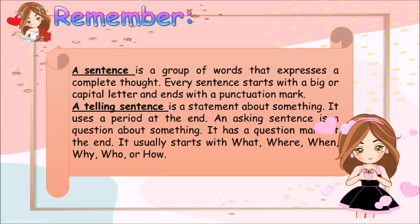Let us remember: A sentence is a group of words that expresses a complete thought. Every sentence starts with a capital letter and ends with a punctuation mark. A telling sentence is a statement about something — it uses a period at the end. An asking sentence is a question about something — it has a question mark at the end, and it usually starts with what, where, when, why, who, or how.